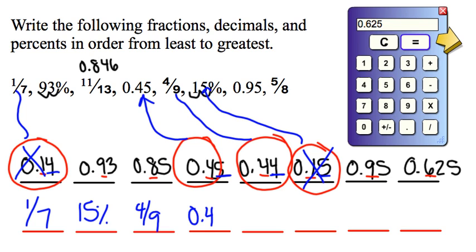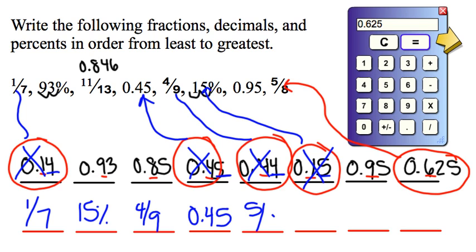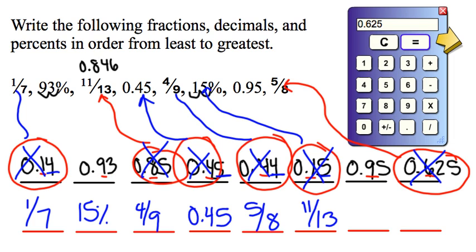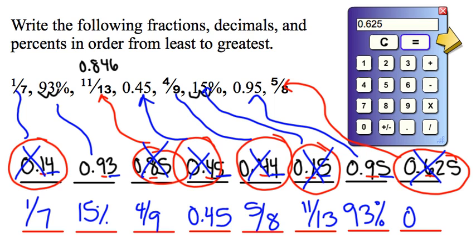As we do this, we make sure to go back and write each number in the form in which the problem was given — fractions, decimals, and percents — because the decimals just help us put them in order. The next smallest number in the tenths place is 6, so 0.625, which is 5 eighths. After that comes 0.85, which is 11 thirteenths. Our last two are 93% and 0.95. In the hundredths place we have 3 versus 5, so our next number is 93%. And by process of elimination, 0.95 is the largest.